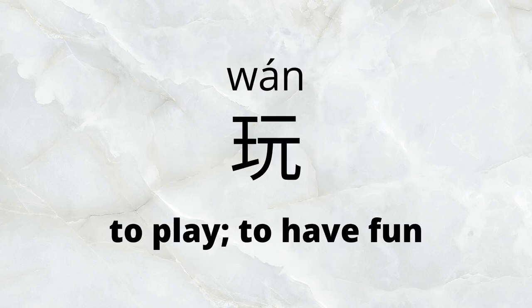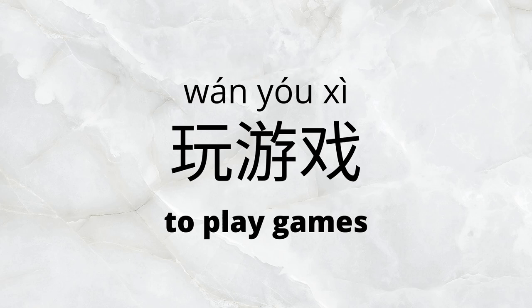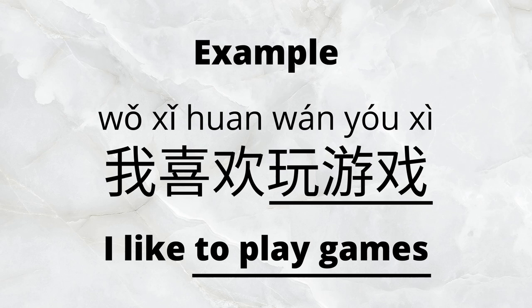For the first section, we'll be using this verb: 玩, which means to play or to have fun. Since we're going to go over a lot of phrases, the format we'll use is one phrase followed by one example. 玩游戏 means to play games. So we can say 我喜欢玩游戏 to say I like to play games.